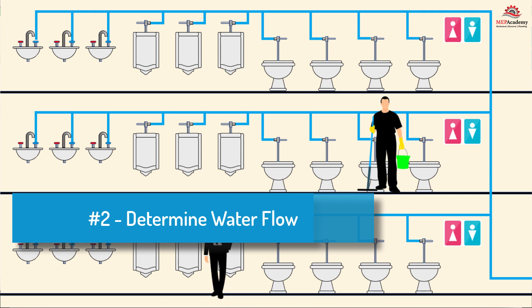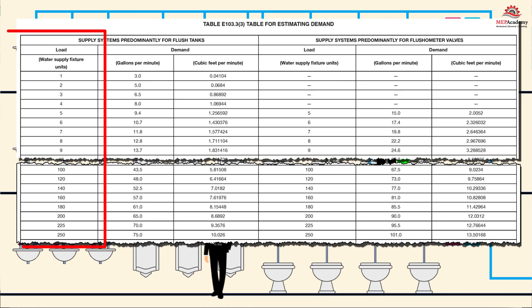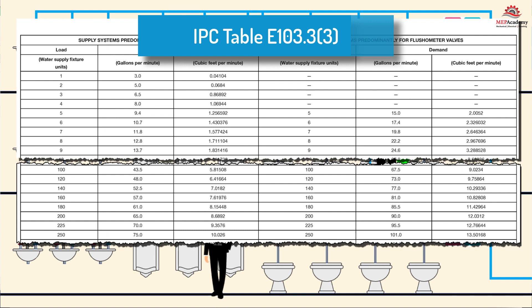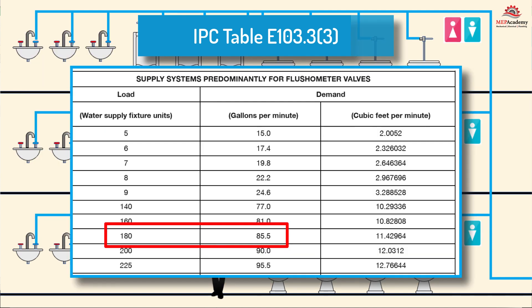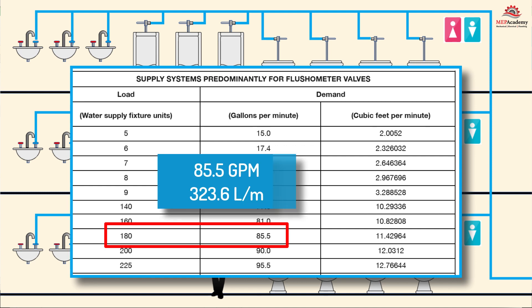Step 2: Determine the water flow in GPM or liters per minute. Determining the water flow involves finding the total water supply fixture units in the far-left column of IPC Table E103.3.3, then moving along that row to the intersection of the demand column for supply systems with flushometer valves. Our total of 178.5 fixture units is close enough to 180, so we use that row, giving us a water flow of 85.5 GPM or 323.6 liters per minute.